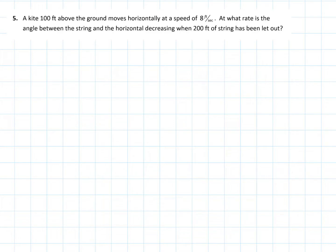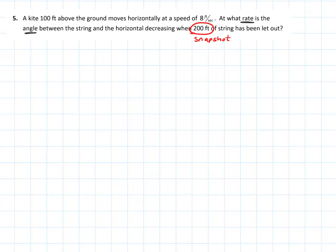If we have a kite 100 feet above the ground moving horizontally at a speed of 8 feet per second, we're asked at what rate is the angle between the string and the horizontal decreasing when 200 feet of string has been let out. We're given a snapshot in time. As you're letting string out, there's only a moment — an instant in time — when it hits that 200 feet. This 100 feet, the kite being 100 feet above the ground, is a constant, a fixed value.